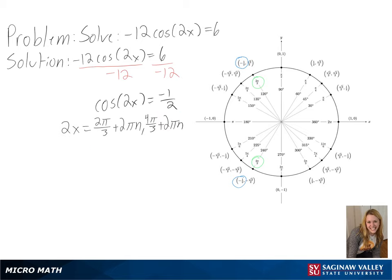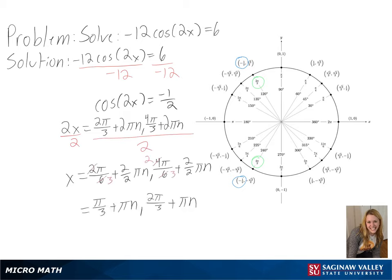Finally, we need to get x by itself. So we will divide both sides by 2, and we will get pi over 3 plus pi n and 2 pi over 3 plus pi n as our final answers.